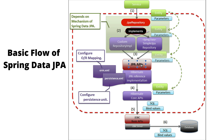As we know, JPA is just a standard specification or API and doesn't have any implementation. There should be an implementation for JPA APIs. Spring Data JPA internally uses Hibernate by default as a JPA implementation, or JPA provider. So in this flow, we are using Hibernate as the JPA implementation.